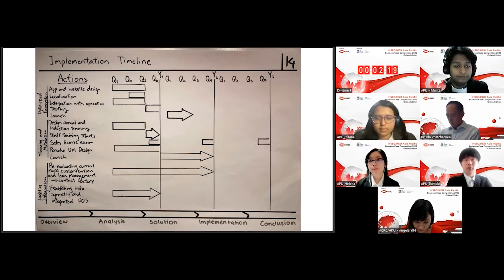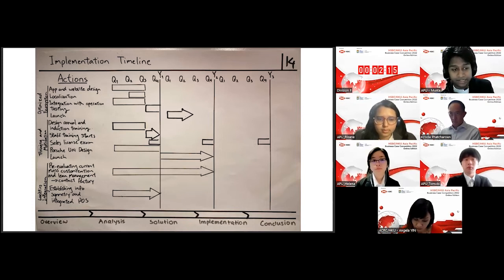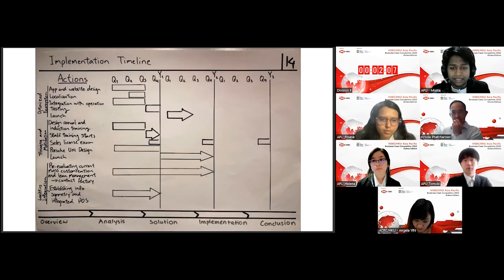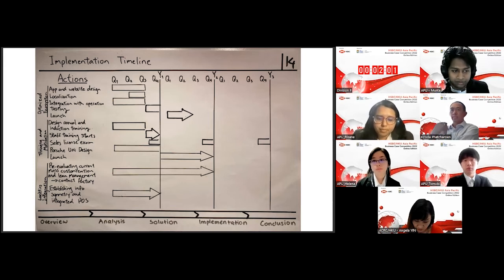Secondly, for training and motivation, we'll first need the first three quarters to design the annual and induction training. And after that, we'll be starting the staff training itself. We want to take the sales licensing exam at the end of quarter four, and then employees can take it any time in quarter four of the subsequent years. And that should allow for us to see their current state.